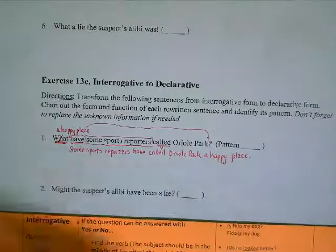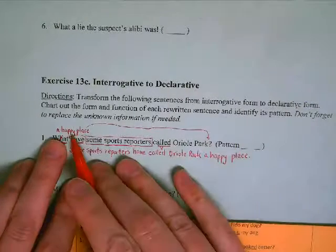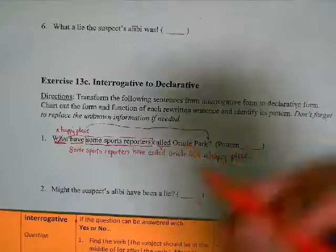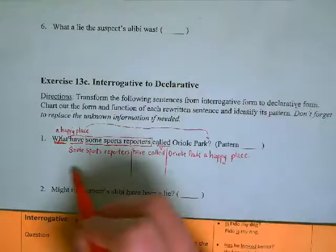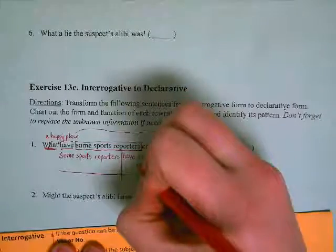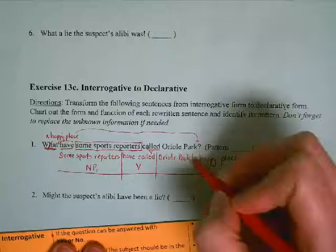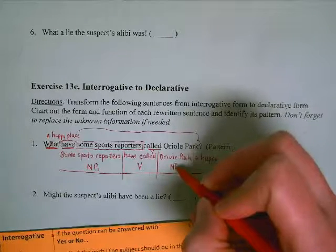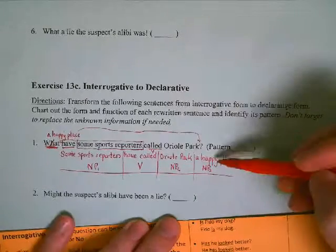That's my rewritten sentence, all the same stuff, just one thing that's an addition because I replaced my WH-word. Then I chart it out. 'Have called' is my verb. Some sports reporters, noun phrase one. Oriole Park and a happy place, I'm going to split those up because those are two noun phrases, but they do refer to the same thing.